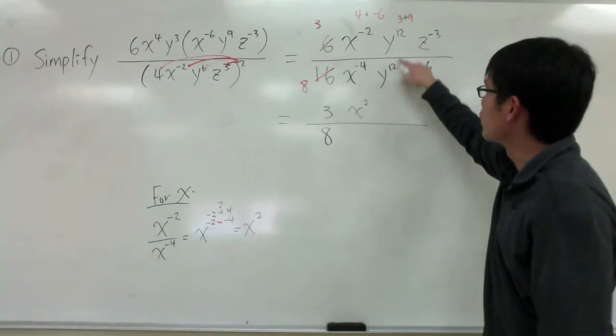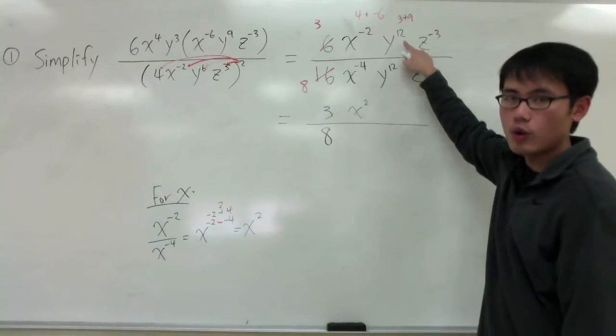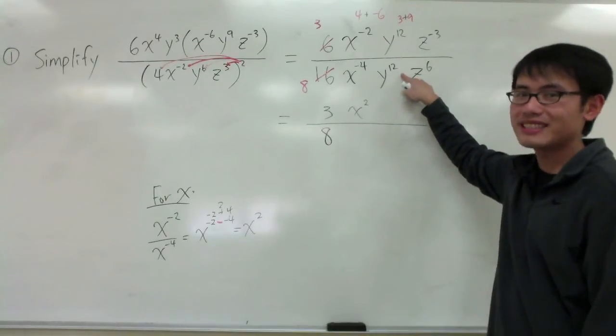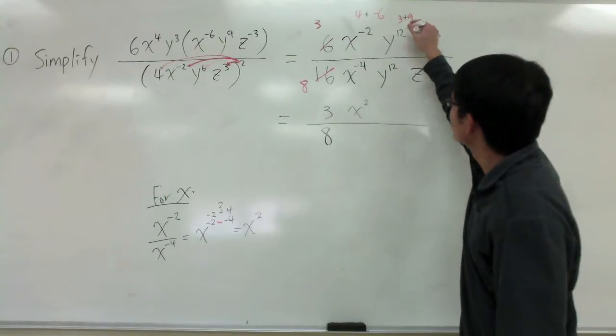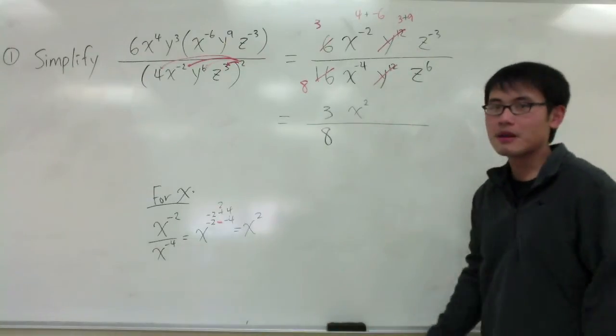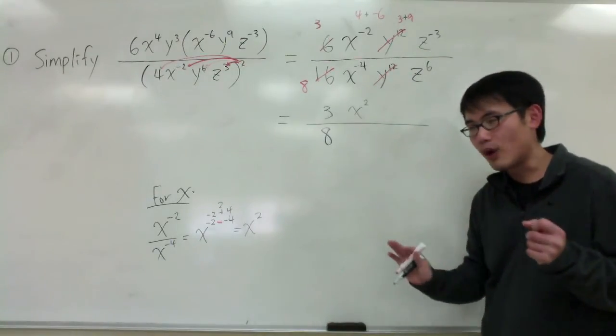Then, let's work with the y. I have y to the 12 over y to the 12. Notice that they are exactly the same. So, I can just cancel them out right away. I have no more y for my answers.